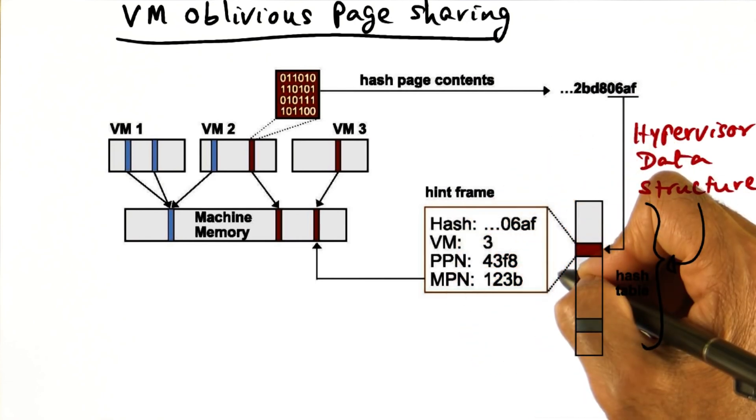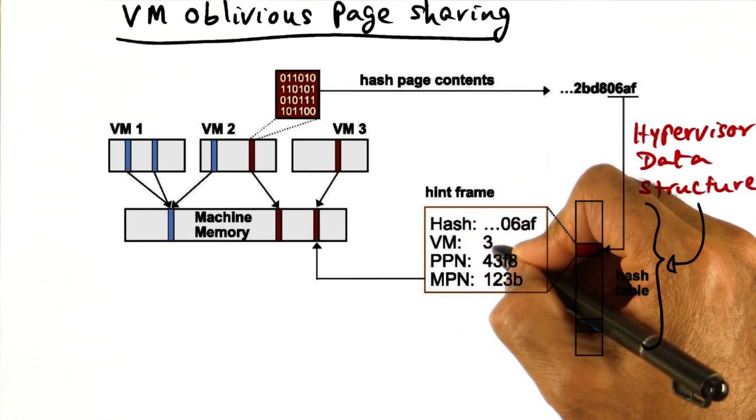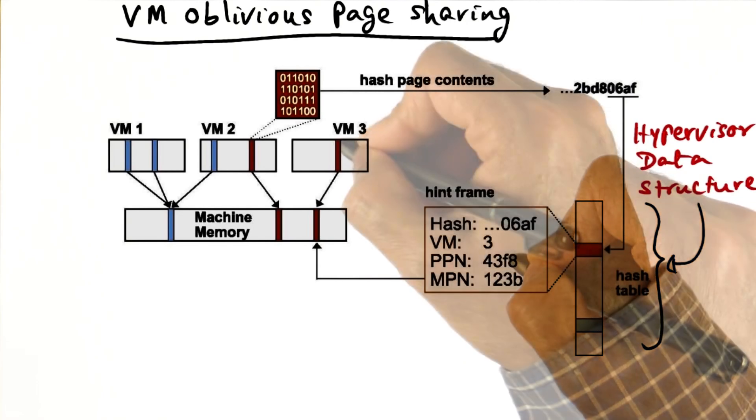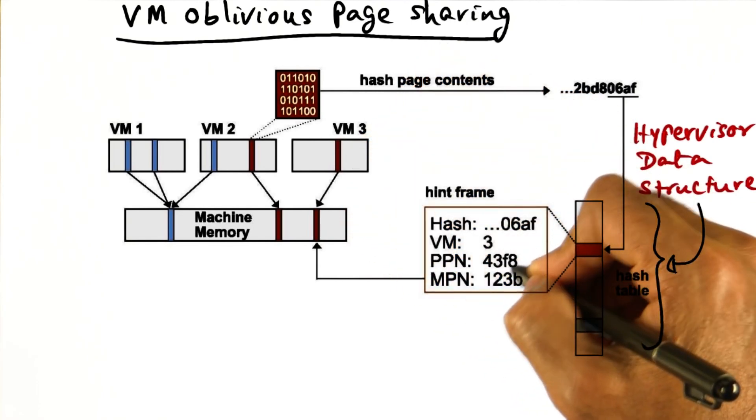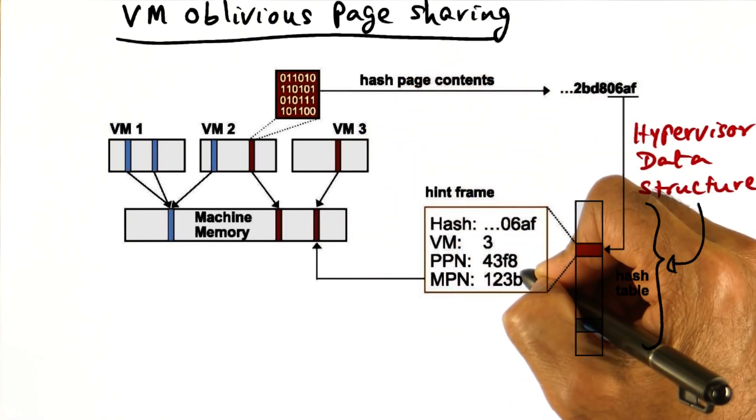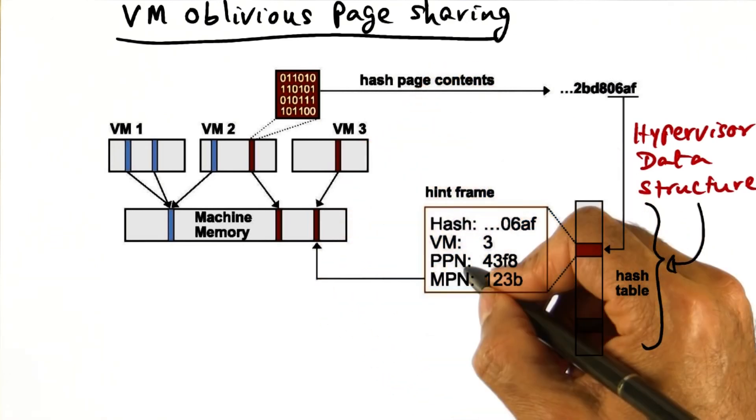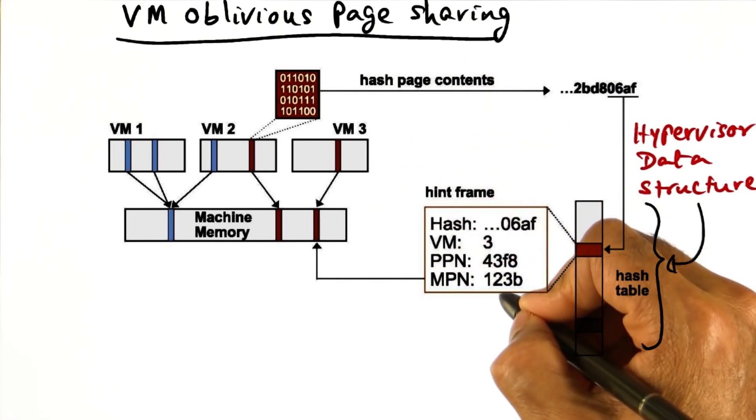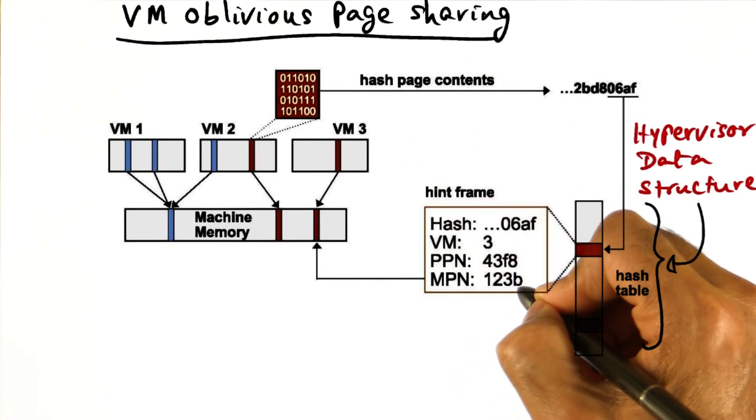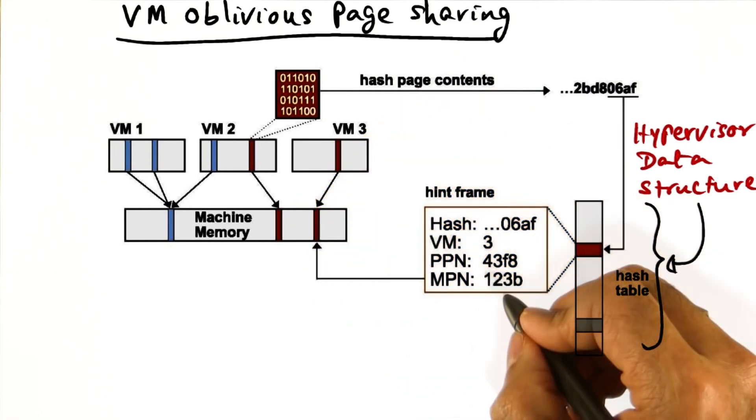For instance, this entry is saying that for virtual machine number three, for its physical page at address 43F8, there is a machine page that hosts this physical page number of VM3, and that's contained in machine page number 123B.